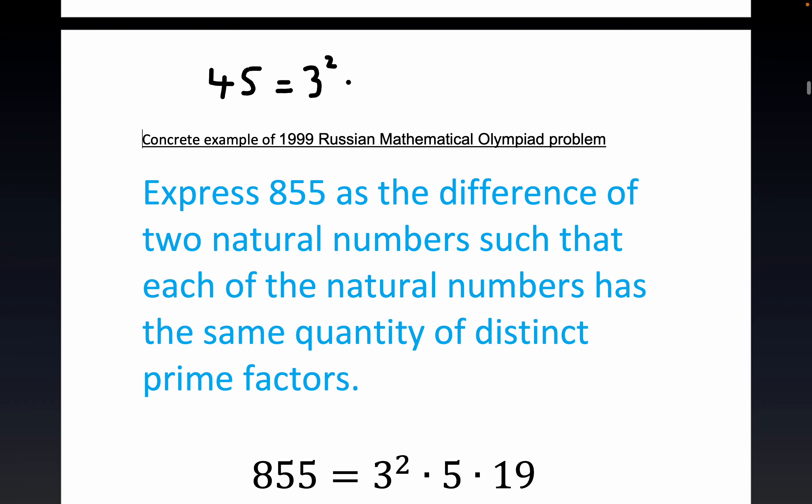Now notice that 45 has two distinct prime factors, namely 3 and 5. 3 occurs twice, but there's only two distinct prime factors.